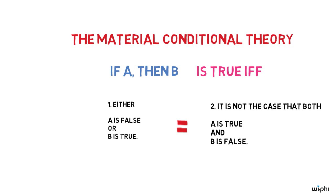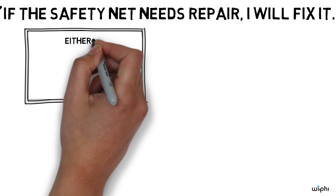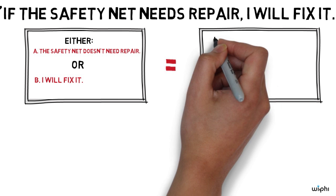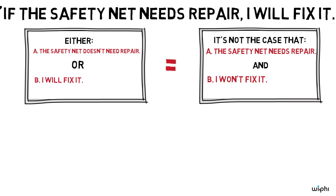Thus, according to this theory, when Romney utters one, he tells us that either the safety net won't need repair or that he will fix it. Equivalently, he tells us that it's not the case that the safety net will need repair and he won't fix it.